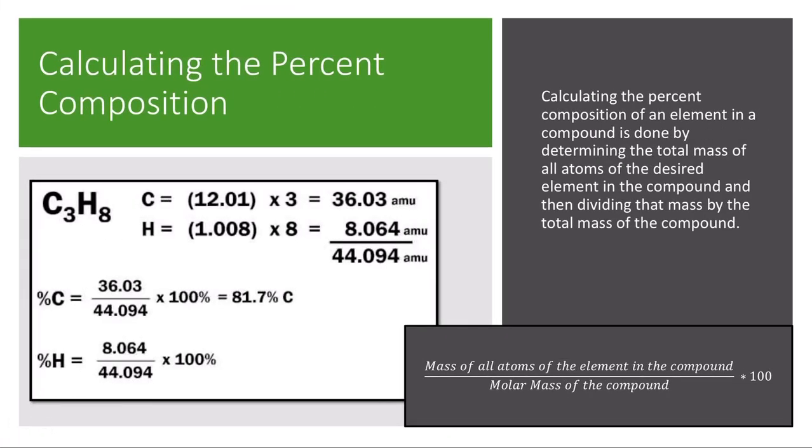When we calculate the percent composition of an element in a compound, we do this first by determining the total mass of all of the atoms of the desired element in the compound, and then dividing that mass by the total mass of the compound or the total molar mass.